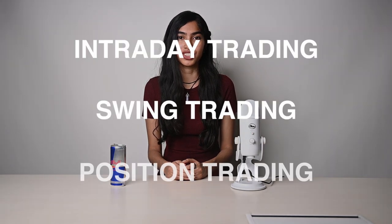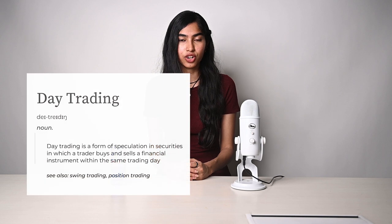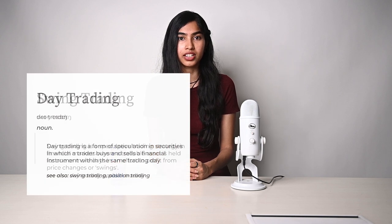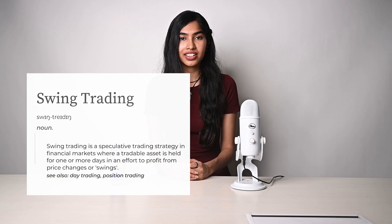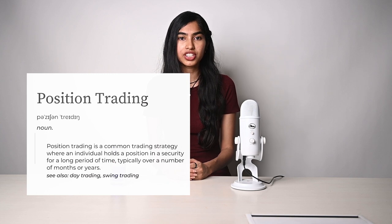So there are mainly three types of trading: intraday, swing, and position. Intraday trading is short-term trading where you hold on to your position for maximum a day. Swing trading is when you hold on to your position for several days, sometimes weeks. And position trading is when you keep your trades alive for weeks, months, and even years.